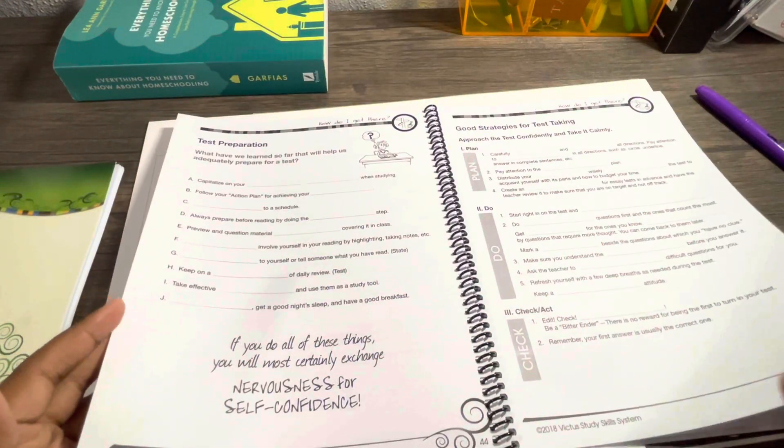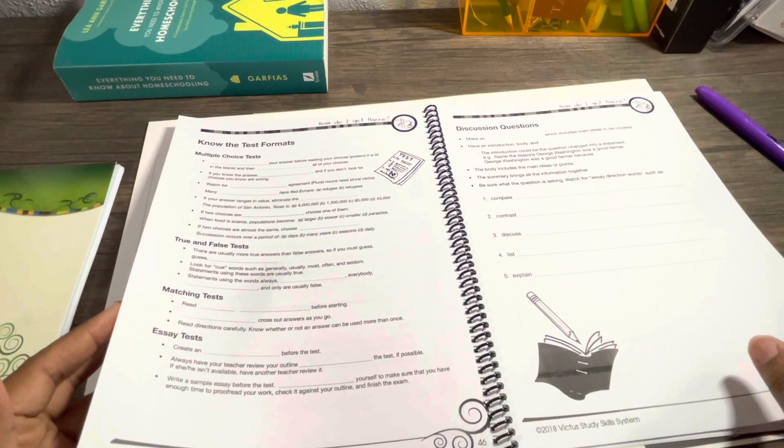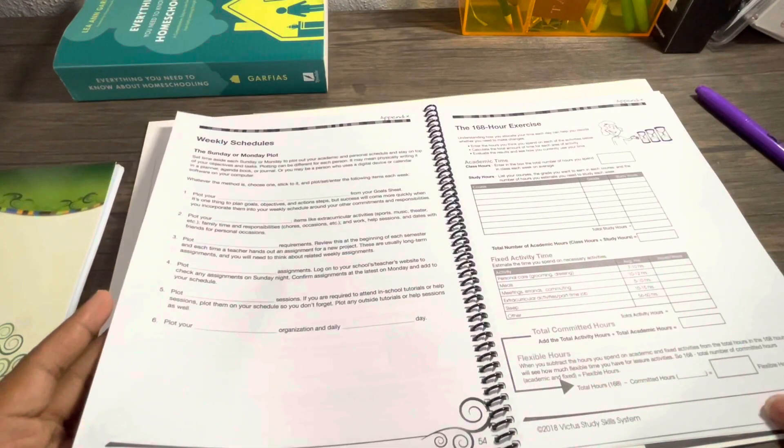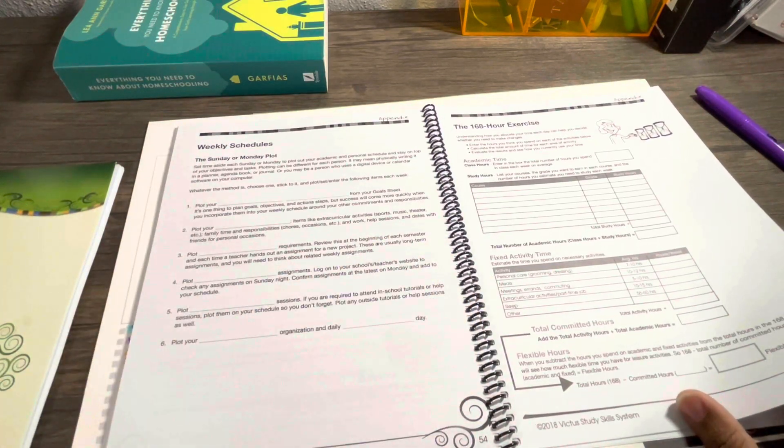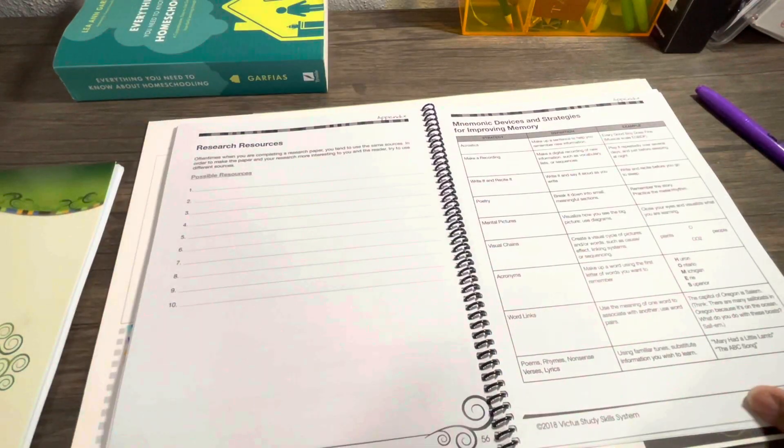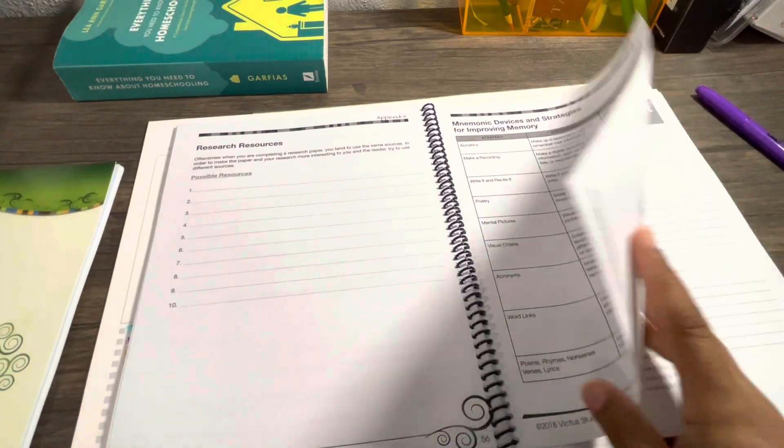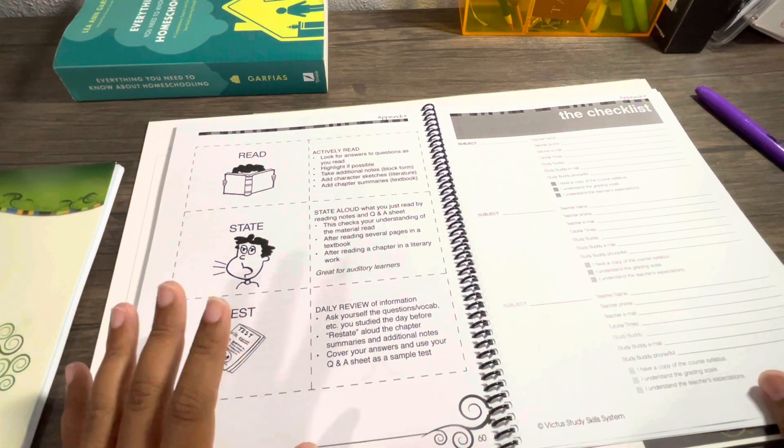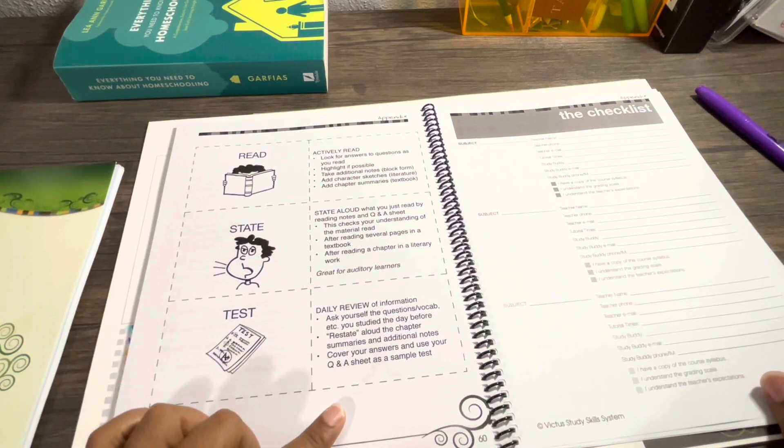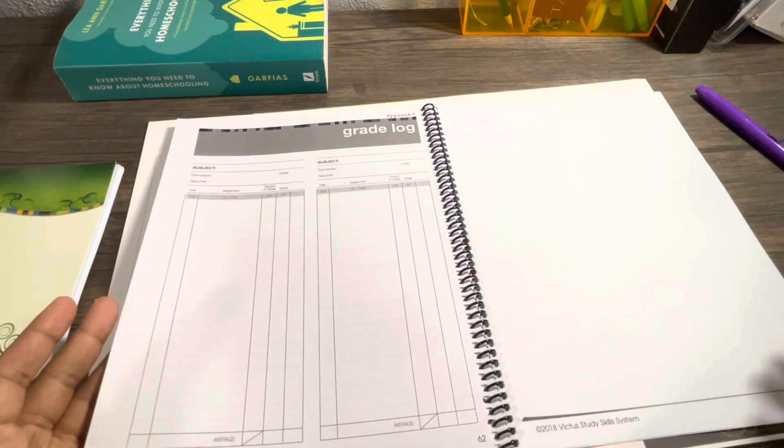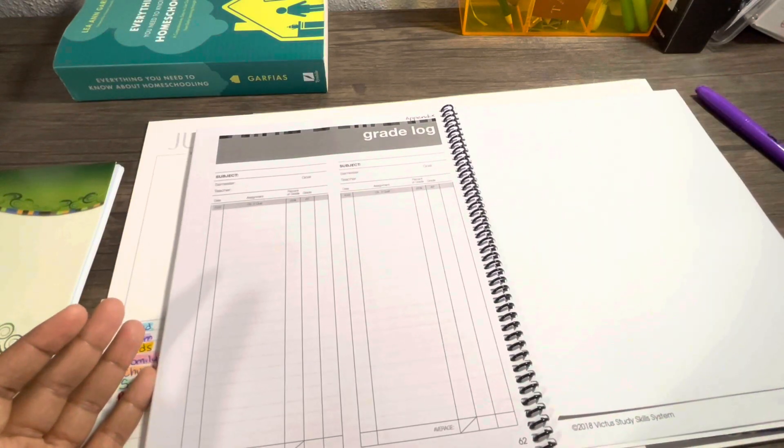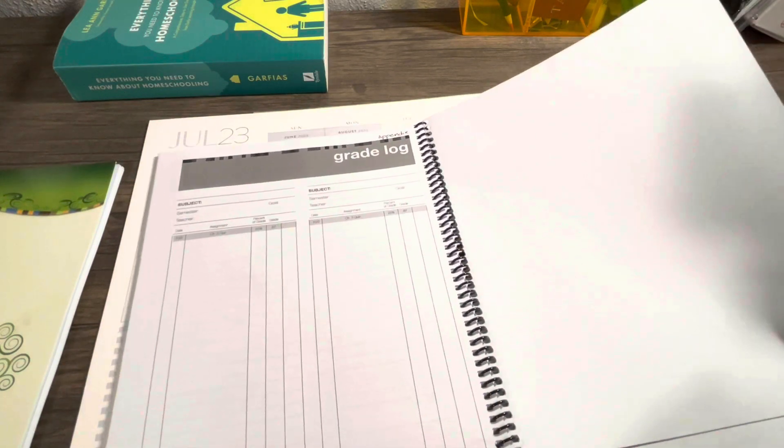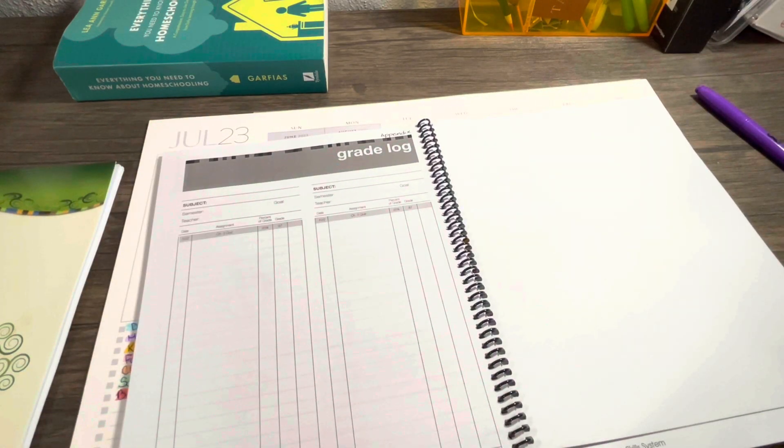This is just what it looks like. It keeps going, talks about multiple choice tests, goal setting, your hours in the day. It really goes into breaking it down and showing them, because sometimes our kids really think that they have more time than they really do. There's also a grade log to show them if that's something you wanted to incorporate in your homeschool where you let them keep their own grades.